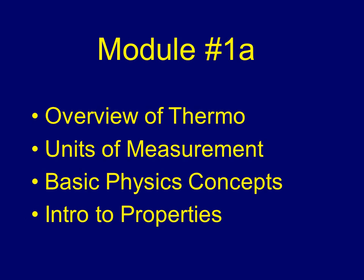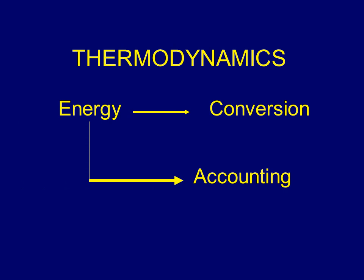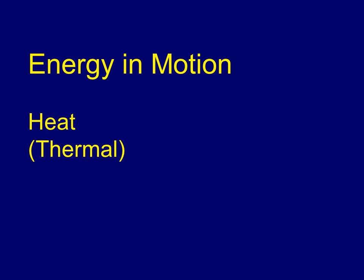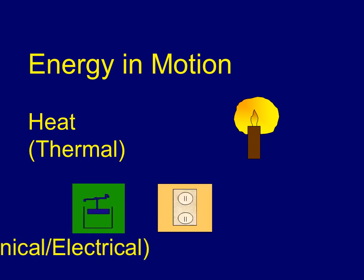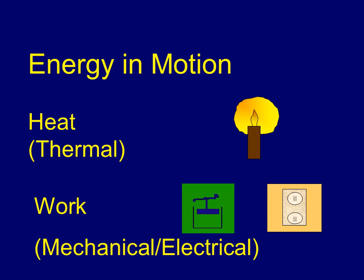Thermodynamics deals with energy and its conversion into various forms, and an accounting for energy, so that we can account for the different forms of energy in various processes. There are two types of energy in motion. One is heat — that's energy moving from one place to another; heat is thermal energy as you would find with a candle, an electric heater, or solar energy. Work is a higher form of energy: mechanical or electrical energy, which could be the moving of a piston up and down. Electrical energy can be converted completely into mechanical and vice versa, but that's not true for heat — heat cannot be completely converted to work.